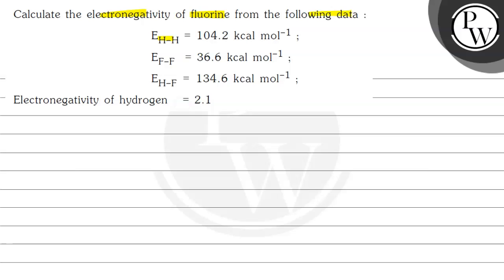The bond enthalpies for H-H, F-F, and H-F bonds are given in this case, and the values are in kilocalorie per mole. Electronegativity of hydrogen is 2.1.